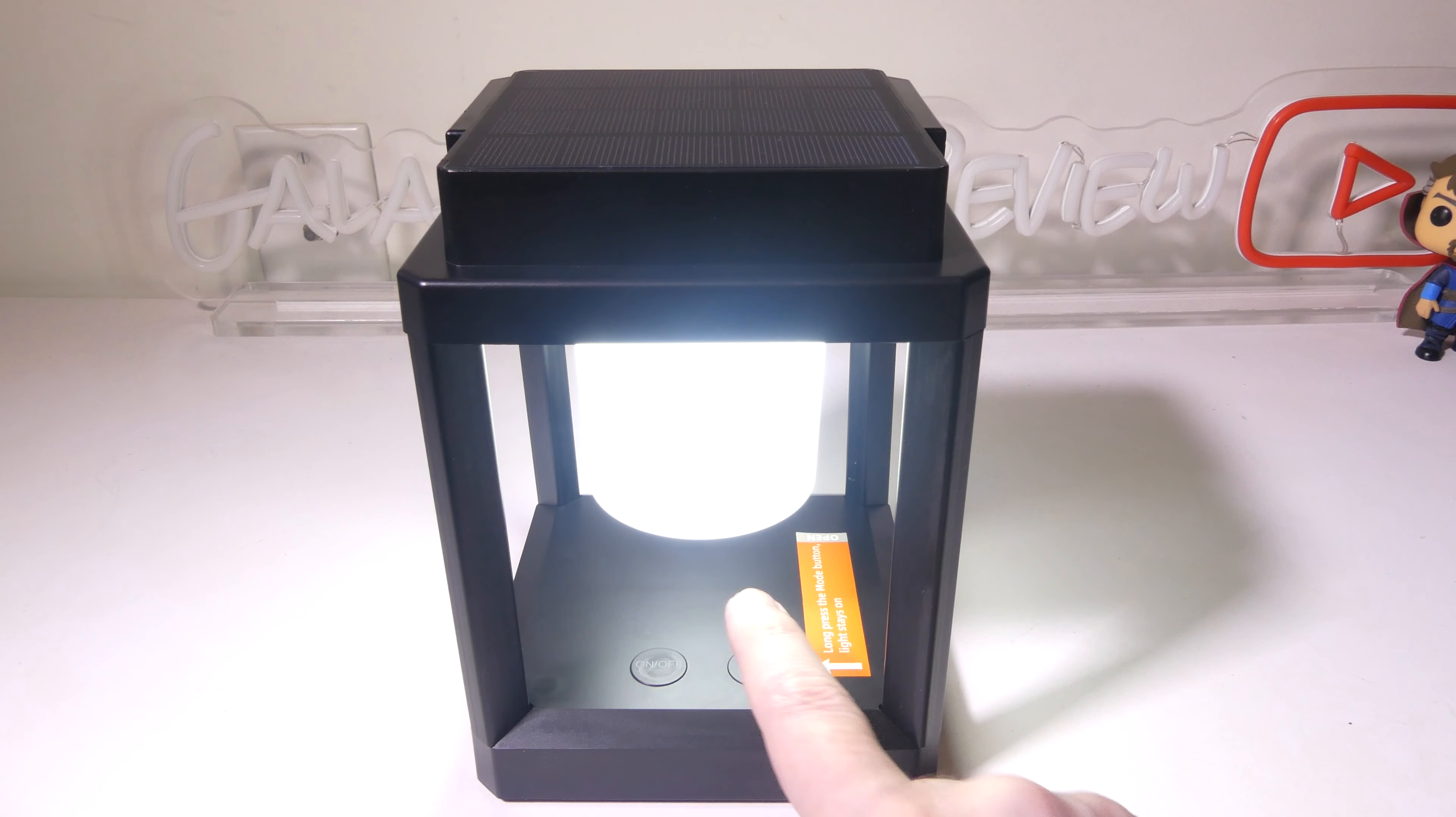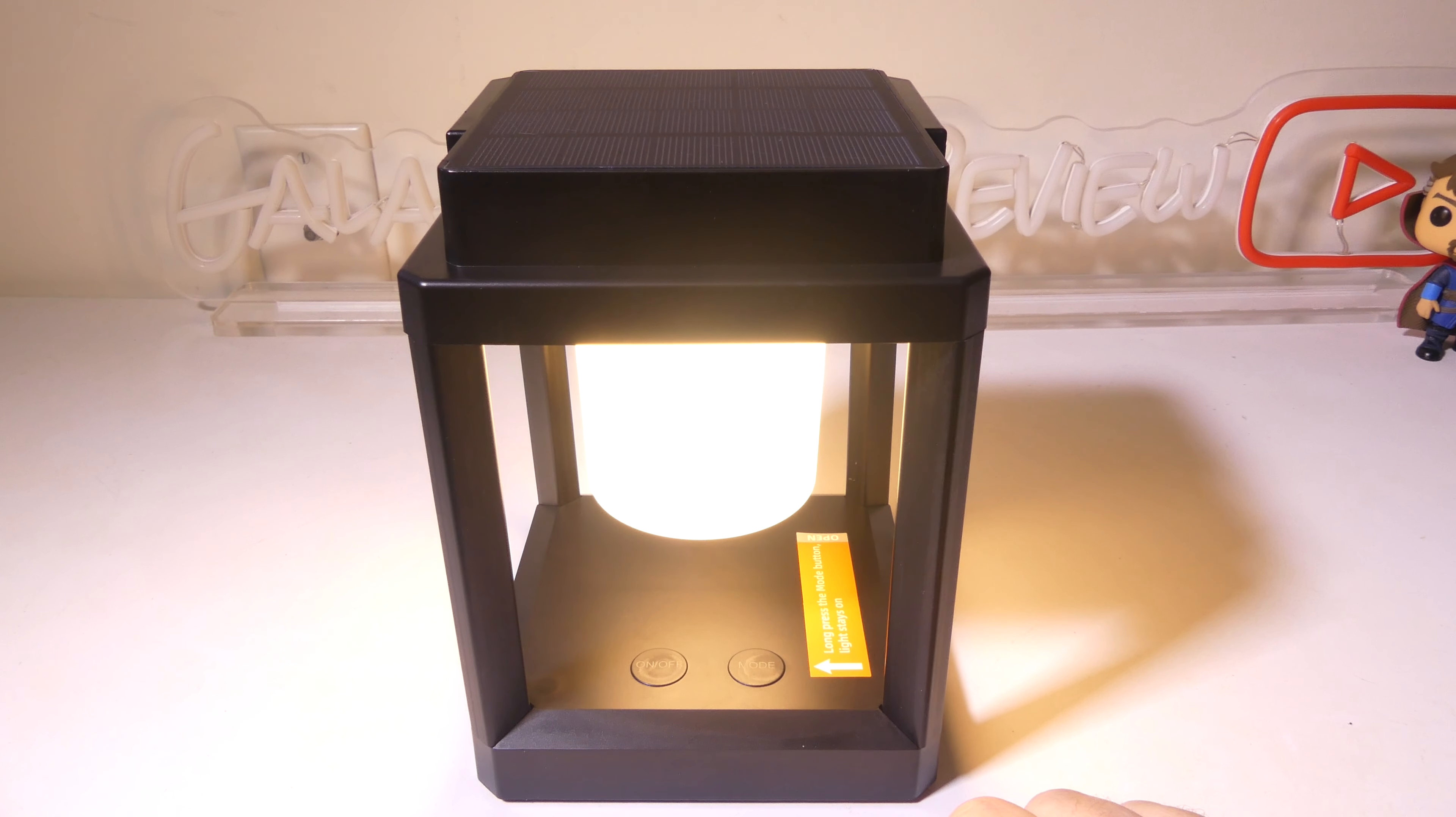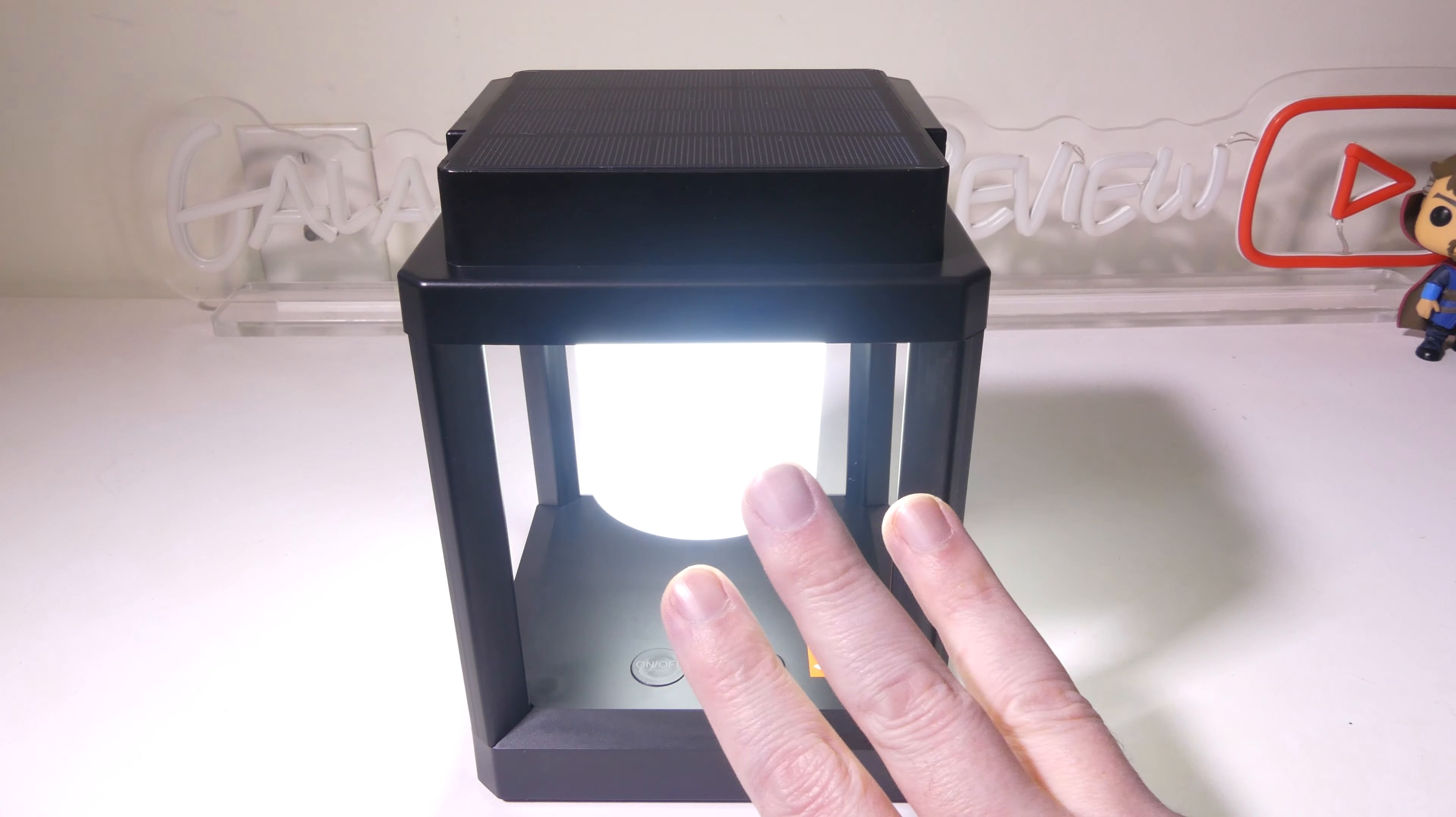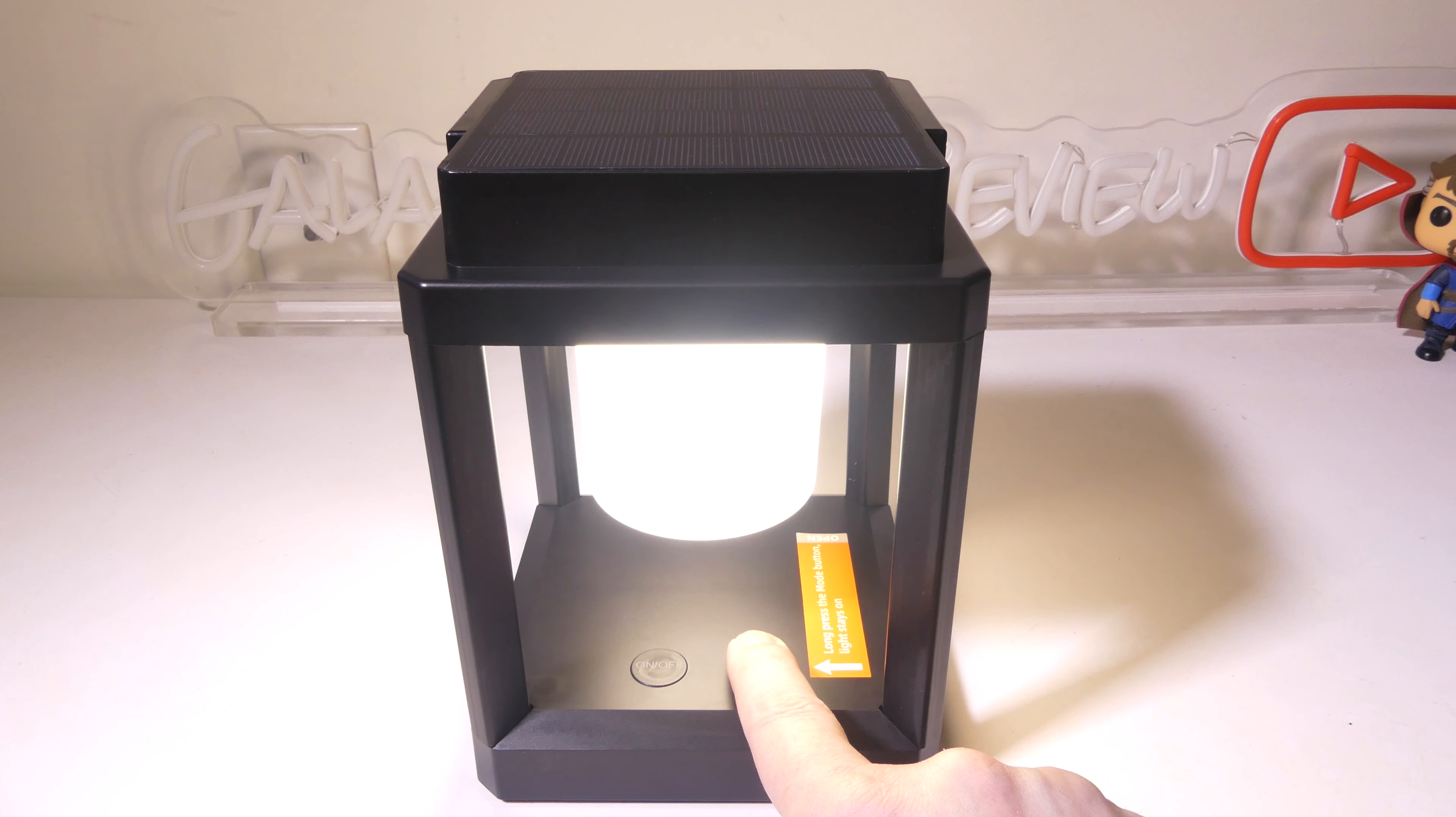Now, short pressing here, we can change with the mode button three different color temperatures. As you can see, I've cycled through three different color temperatures here, which is nice. It gives you either warmer or cooler temperature depending on what you would like to have in whatever scenario, either indoors or on your campsite or what you are using this for.